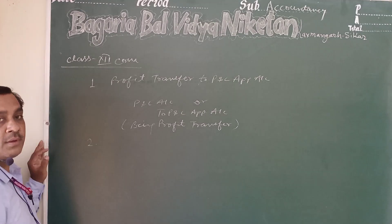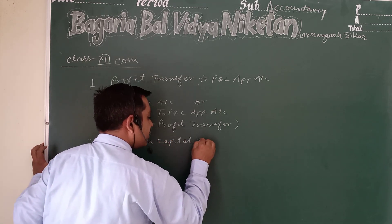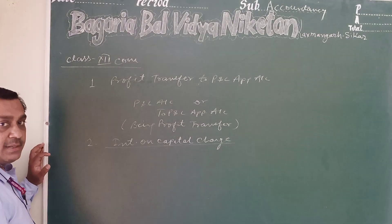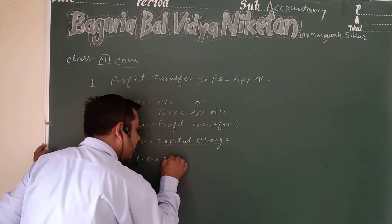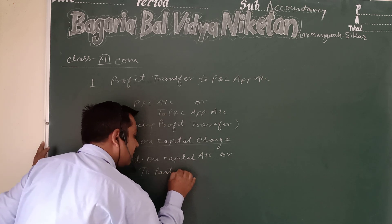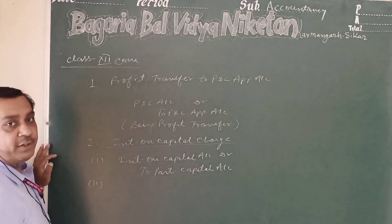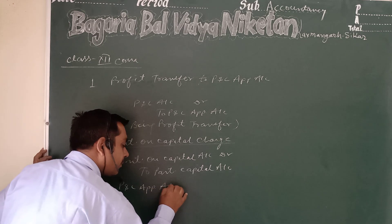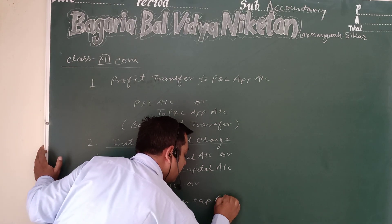The second entry is for interest on capital. When interest on capital is charged, the first entry will be: Interest on Capital Account debit to Partners' Capital Account. Then, to transfer and close interest on capital, the second entry is: Profit and Loss Appropriation Account debit to Interest on Capital Account.